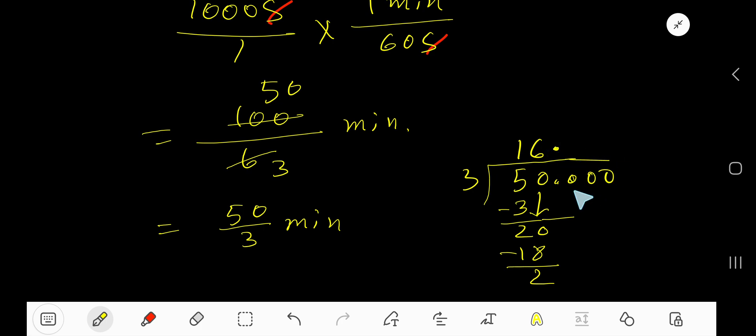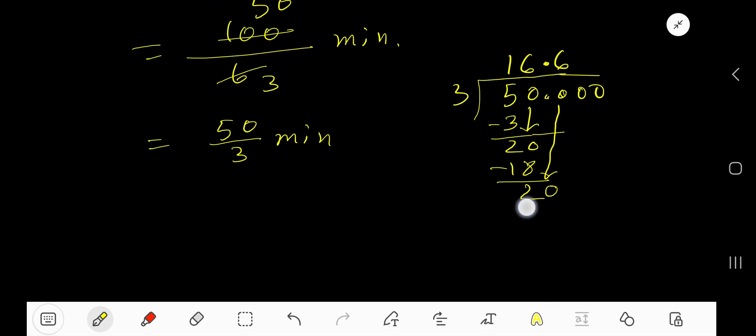Decimal must come here. Bring down the first 0. 3 goes into 20, 6 times.